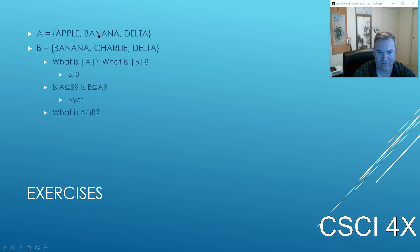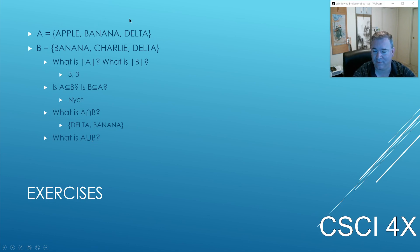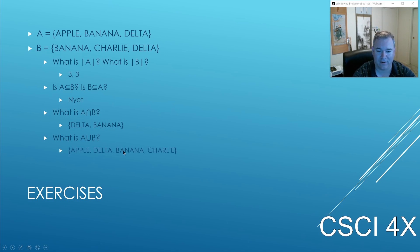The intersection of the two contains elements found in common between A and B — banana and delta appear in both, so the intersection is {banana, delta}. The union of the two is all elements removing duplicates: apple, banana, delta from A, then banana is a duplicate, charlie from B, delta is a duplicate. So it's {apple, banana, charlie, delta} — you can write it in any order because the order doesn't matter.